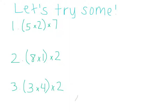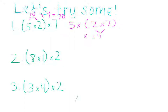For the first one, we have 5 times 2 is equal to 10, times 7 is equal to 70. But if we move the parentheses over, changing the groupings, we have 5 times 2 times 7, which is equal to 14 times 5, which is also equal to 70 — the same answer.